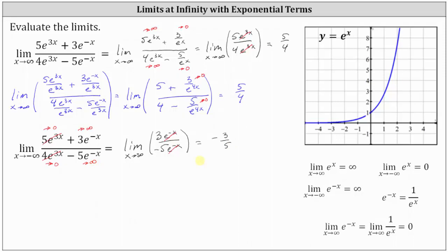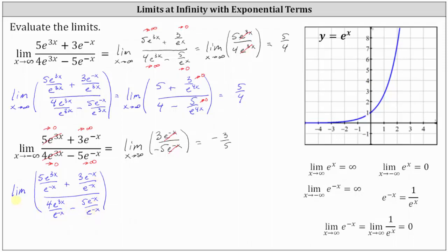Now let's look at a second method for determining this limit. In the previous limit, we divided everything by e to the power of 3x and then simplified. But for this limit, the terms involving e to the power of 3x are going to 0, so we'll divide every term by e to the power of negative x. We'll have 5 times e to the power of 3x divided by e to the power of negative x, plus 3e to the power of negative x divided by e to the power of negative x, all divided by 4e to the power of 3x divided by e to the power of negative x, minus 5e to the power of negative x divided by e to the power of negative x, as x approaches negative infinity.